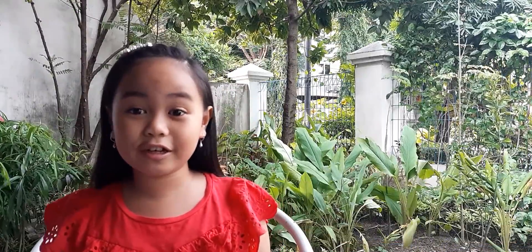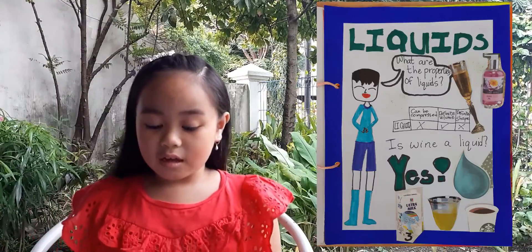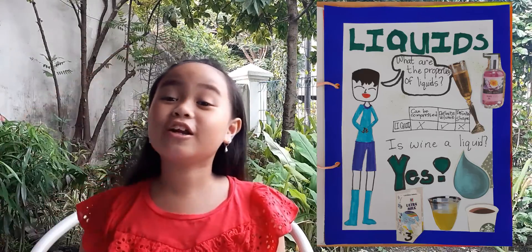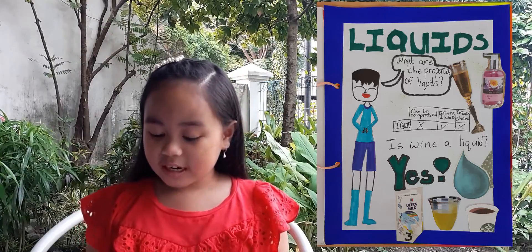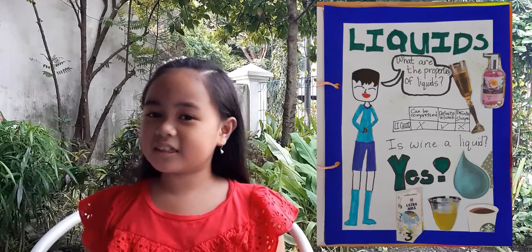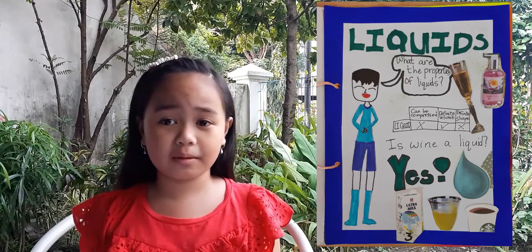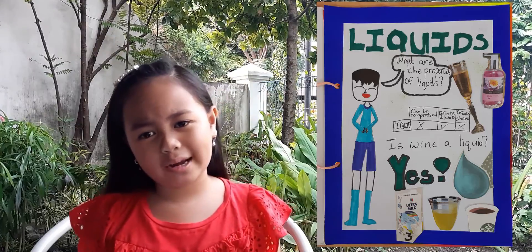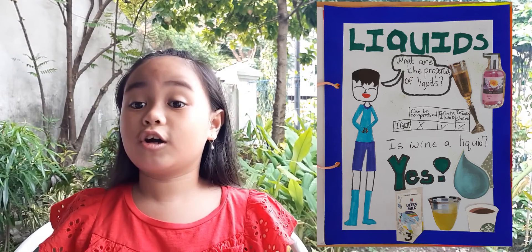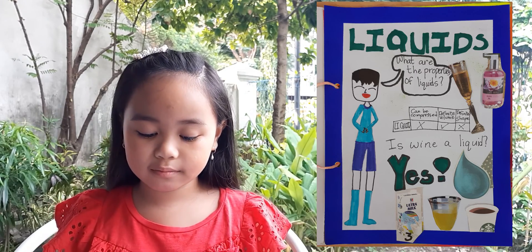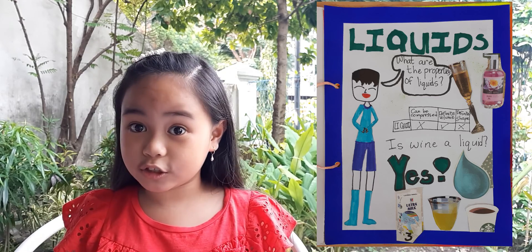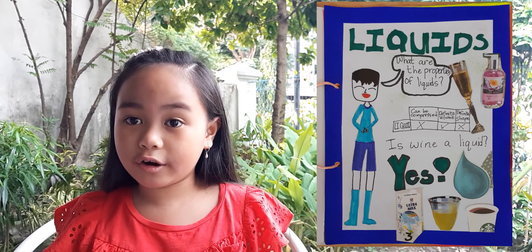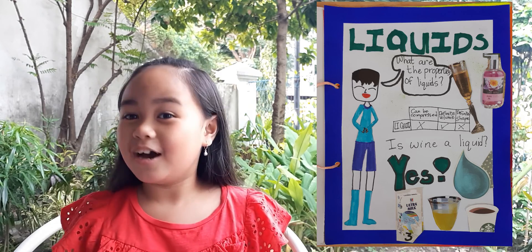Let's move on to liquids! Mr. Liquid asked, what are the properties of liquids? And again there's a chart. It says here liquids cannot be compressed, but they have definite volume and no definite shape. And here's one question: is wine included? Yes! There are other examples of liquids on this page, like hand wash, a drop of water or a teardrop, some ultra milk, some orange or lemon juice, and lastly, coffee from Starbucks!